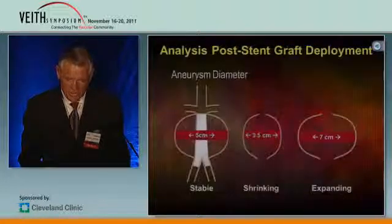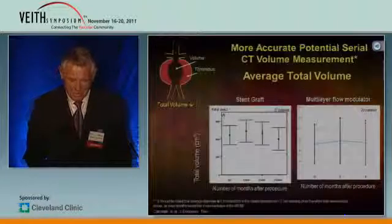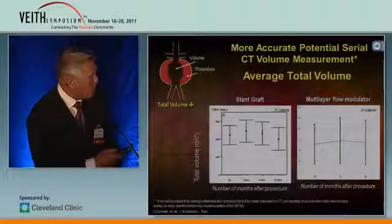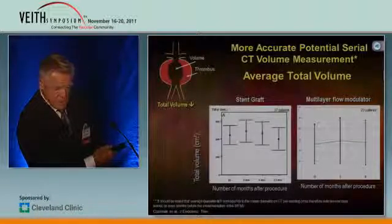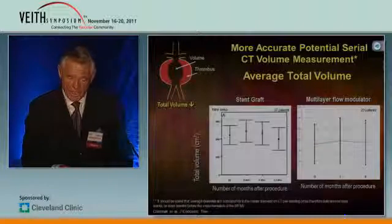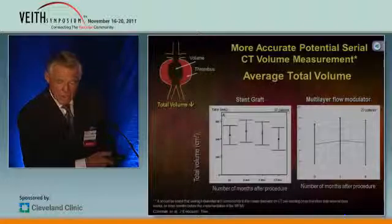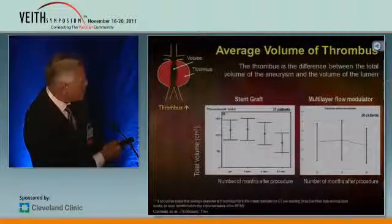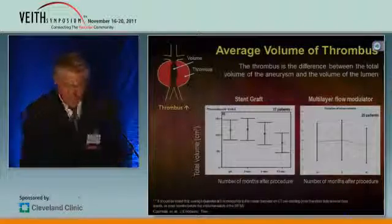Now, we usually think about following these patients by looking at diameters. That probably is not the best way. We probably now should be looking more accurately at CT volume measurements — serial measurements. One paper showed in stent grafts in 37 patients a slight increase in volume early, and then as time goes on, the volume goes down. We looked at 20 patients with a multi-layer stent, and the same thing occurs — a slight increase in volume early, and then that volume goes down with these CT measurements. The same thing occurs in thrombus volume in this set of patients with stent grafts.